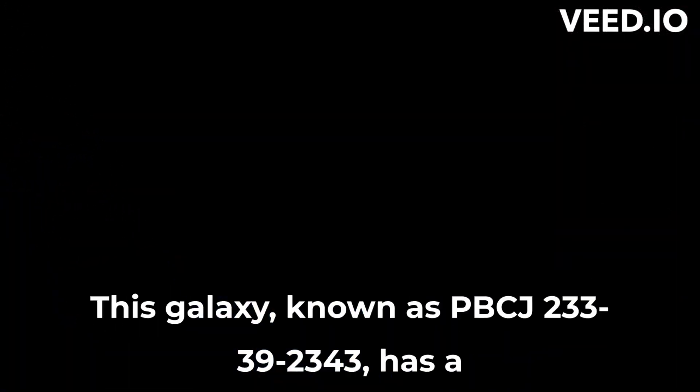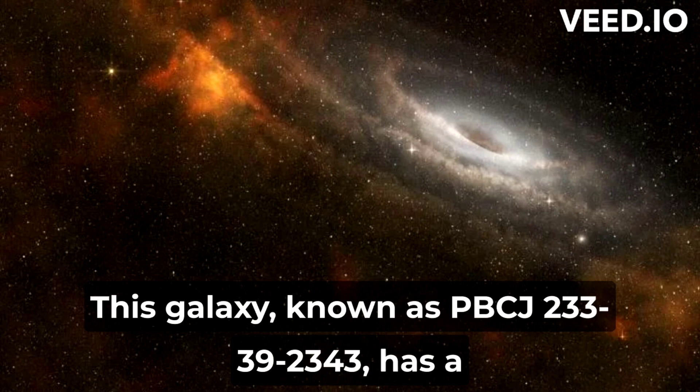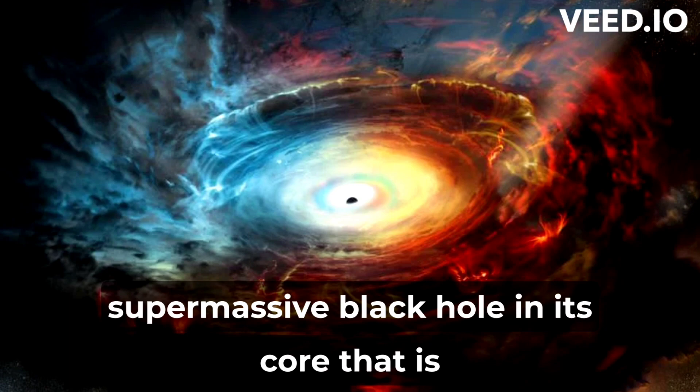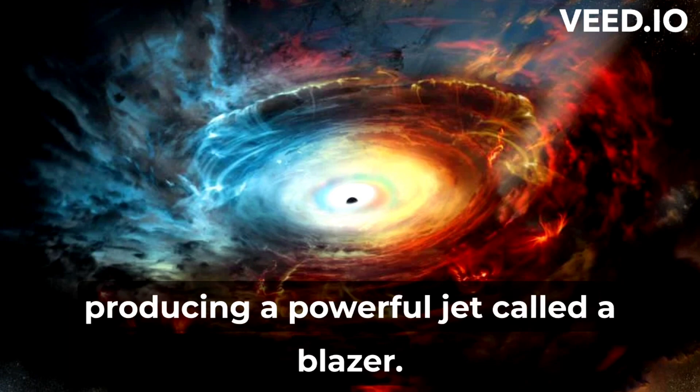This galaxy, known as PBCJ 2333.9-2343, has a supermassive black hole in its core that is producing a powerful jet called a blazer.